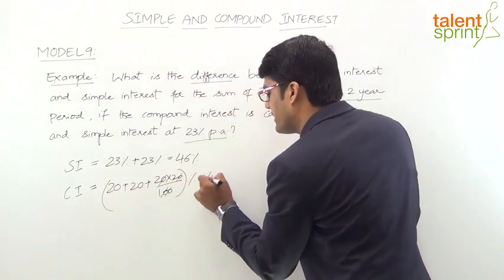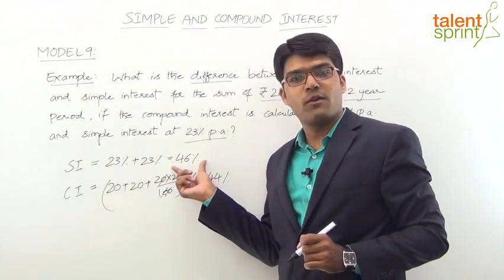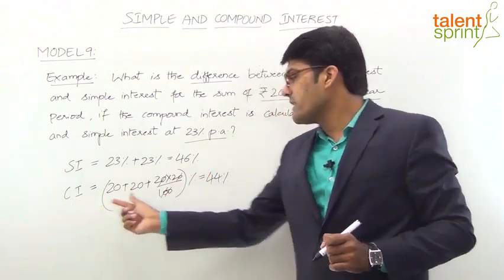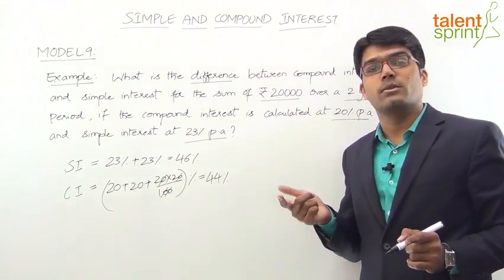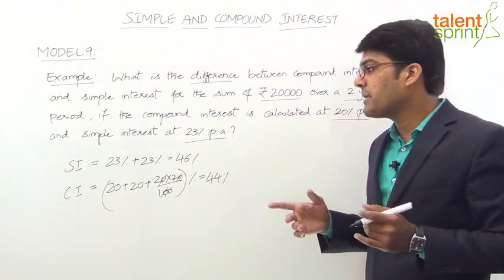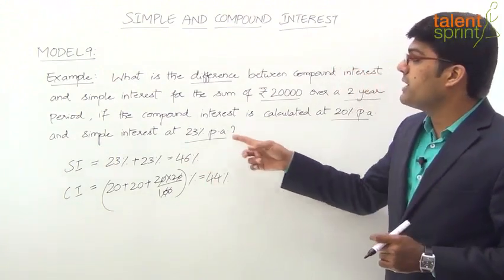So simple interest total which is 46%, compound interest rate is 44%. Well generally what happens, compound interest is more than simple interest for a given period, but here the rates are different.